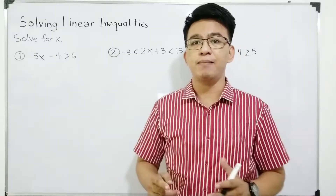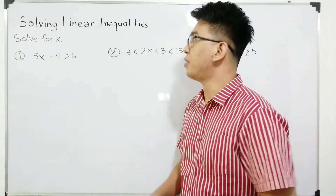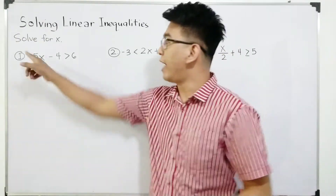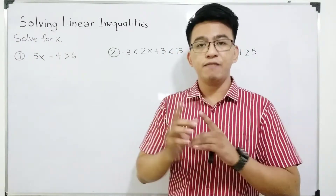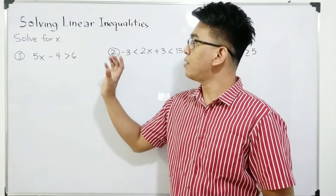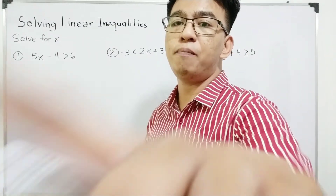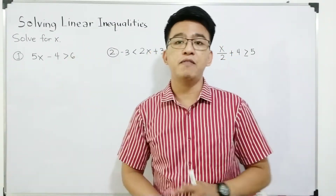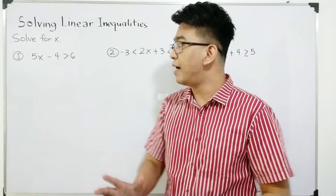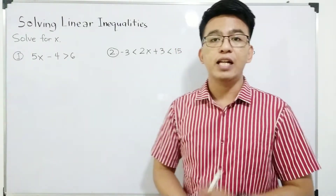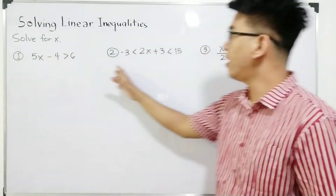Let me give you a background about the difference between linear inequalities and linear equations. When it comes to linear equations, when we solve for x, there is a definite, single value for x. But when it comes to linear inequalities, there are infinitely many possible values of x. Our target today is to solve for that infinite number of values of x for the given linear inequality. We have here: solve for x given these three inequalities.